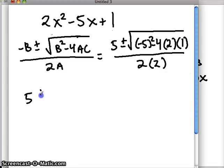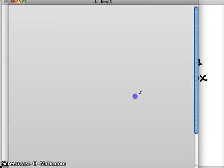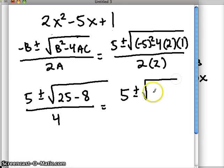Simplify. 5 stays there for a little while. Negative 5 squared becomes positive 25. Negative 4 times 2 is negative 8, times 1 stays negative 8. We're all over 2 times 2, which is 4. Simplify under the radical. 5 plus or minus, 25 minus 8 is 17, all over 4.